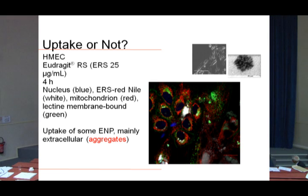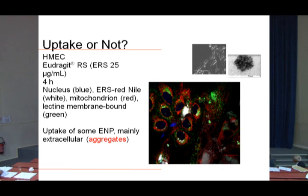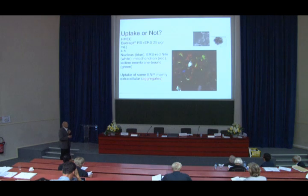For human mammary epithelial cells, we also observed uptake of nanoparticles, but less than in macrophages. We noticed with Raja Hussein at Brooks Labs that the main nanoparticles are aggregated outside the cells, though some are of course inside the cells. Here we have nanoparticles labeled by Nile red and they appear in white, as also seen in George Brooks' talk.